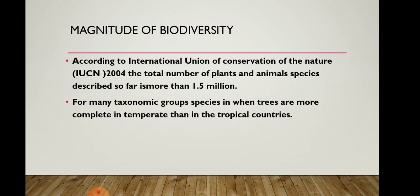Assuming that a large number of species are undiscovered in the tropics, biologists make a statistical comparison of the temperate-to-tropical species richness of an exhaustively studied group of insects, and extrapolate this ratio to other groups of animals and plants.